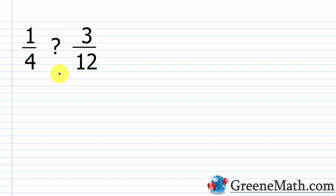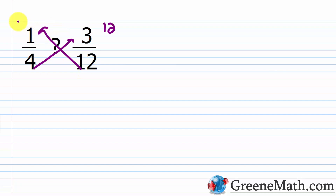You can tell if two fractions are equal by checking the cross products. If I have something like 1/4 and 3/12, I can tell if they're equal by multiplying the denominator of one fraction by the numerator of the other. So 4 times 3 is 12, and 12 times 1 is 12. If you get the same result in each case, then you have a proportion — two fractions, ratios, or rates that are equal in value. So 1/4 is equal to 3/12.